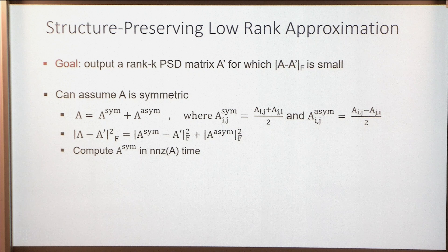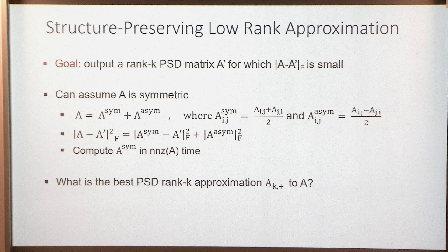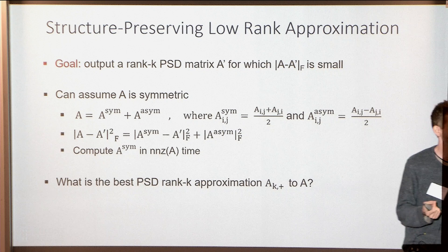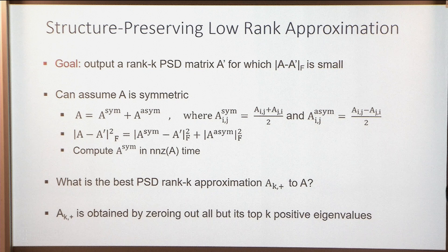So A is symmetric. What is the best PSD rank-K approximation, which I'll call A_K+, to A? You zero out all but the top K positive eigenvalues of A — stopping at the K-th one or the first negative one, whichever comes sooner — and that gives A_K+.